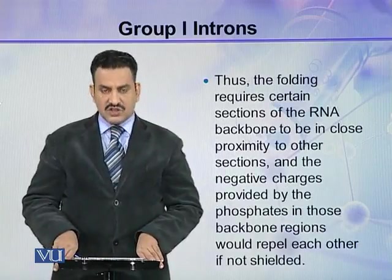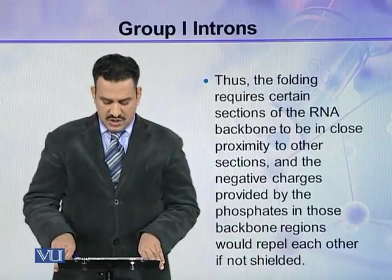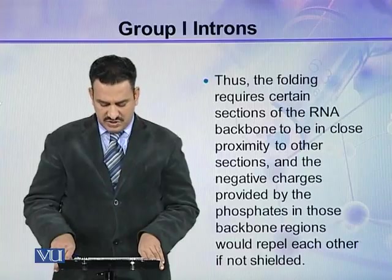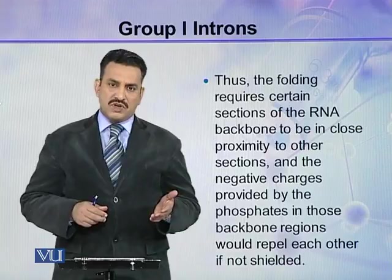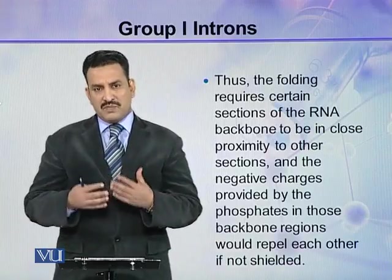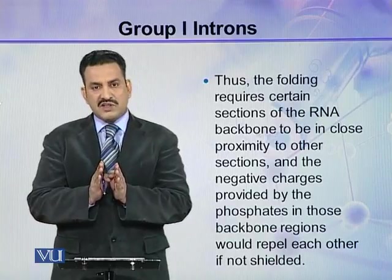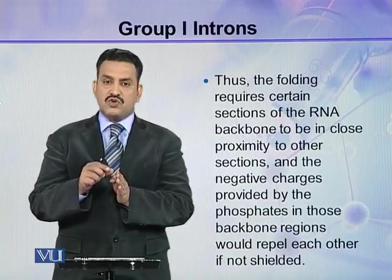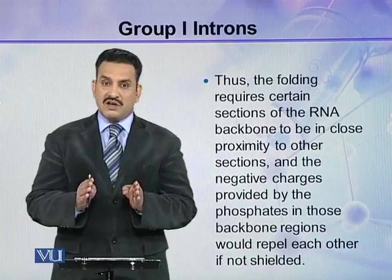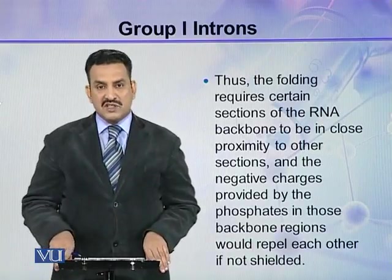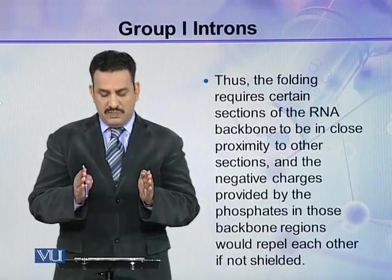Thus, the folding requires certain sections of the RNA backbone to be in close proximity to other sections, and the negative charges provided by phosphates in those backbone regions would repel each other if not shielded. So, as I mentioned, before this intron performs its reaction it must come into proper folding, and as a result of this folding, certain sections of the RNA come close together. But when they come close, the phosphate groups carry negative charges, and these negative charges would repel each other if the RNA were not shielded by proteins. Therefore, protein shields and protections are present so that the sections do not repel each other.